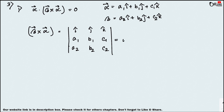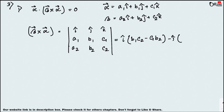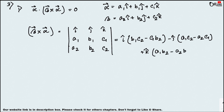So β×α equals i×(b1·c2 − c1·b2) − j×(a1·c2 − a2·c1) + k×(a1·b2 − a2·b1). Now find α dot with (β×α) — take the dot product of α with this result.